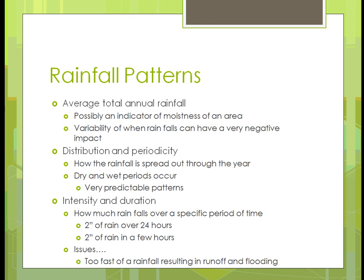Rainfall patterns are very important to understand when growing plants, because plants have to have water to survive and each requires a variable amount. We have to know the average rainfall for an area, which you can look up online — the federal government has sites where you can find that. It can vary in an area, and when it does, it can have a bad impact: you can get too much rain or too little rain.